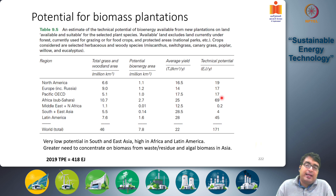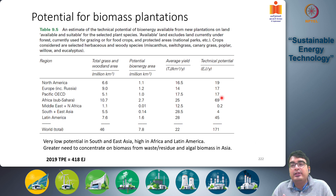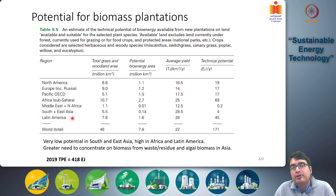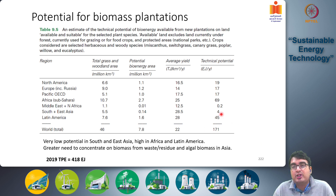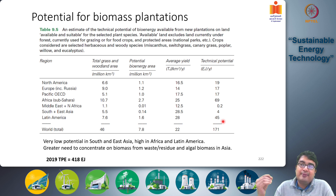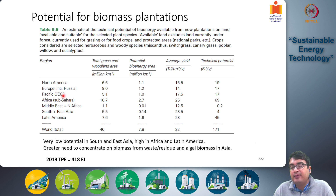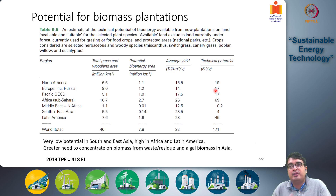Africa, expected to grow very rapidly in the next few decades, can use biofuel as a strategy to develop sustainably. There are also significant resources available in Latin America — including Brazil, Argentina, and other countries — where the potential land area is 1.6 million square kilometers with an average yield of 28 terajoules per square kilometer per year, giving a technical potential of 45 exajoules per year. North America, Europe, and Pacific developed countries like Australia, New Zealand, and Japan can generate around 17 to 20 exajoules per year.